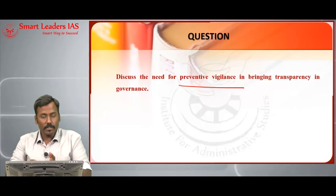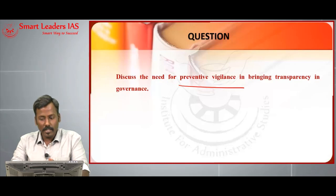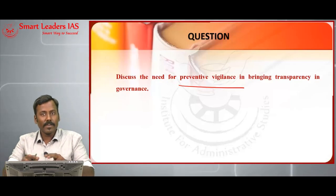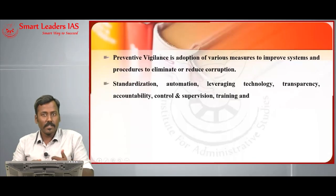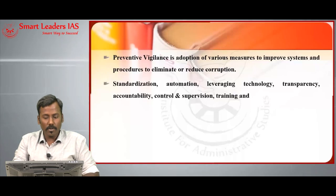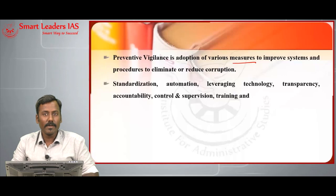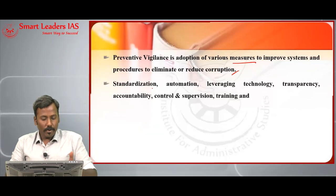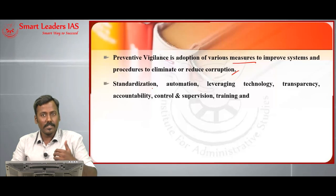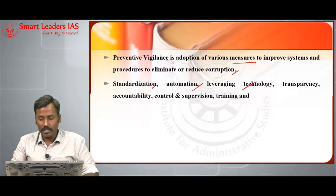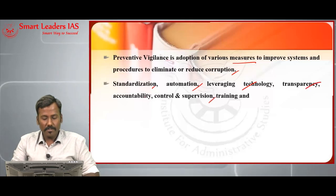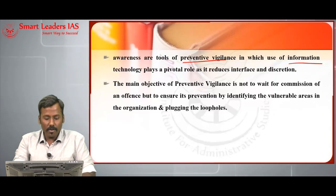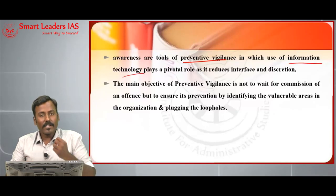The question has two parts: defining preventive vigilance and how it helps bring transparency in governance. Preventive vigilance is the adoption of various measures to improve systems and procedures to eliminate or reduce corruption — it is a mitigative tool. The important processes through which preventive vigilance can be established include standardization, automation, leveraging technology, transparency, accountability, control and supervision, and training and awareness. These tools, used with information technology, play a pivotal role in reducing interface and discretion.